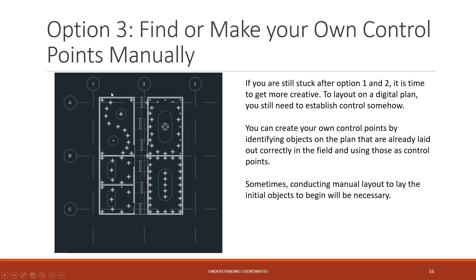Your third option: if the control points given aren't working and there's no way to align them, you can go out and make your own control points manually. For instance, in a drawing where you're hanging lights, you can lay out one light up top manually, then come down and lay out one below manually. Now you have two or three points. Once you know those lights are laid out manually, you can convert those into control points, set your station up, and lay out the rest of your drawing. In construction, you have to be creative.